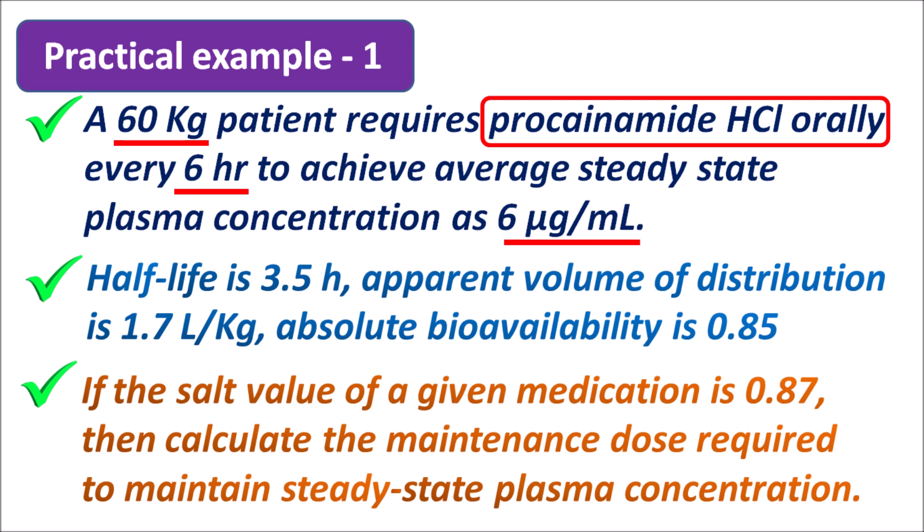Other data given: half life is 3.5 hours and apparent volume of distribution is 1.7 liters per kg. Since volume of distribution is given as liters per kg body weight, we have to calculate the total apparent volume of distribution for the given patient. Absolute bioavailability is 0.85, since the drug is given by oral administration it is not completely absorbed. Salt value of the medication is given as 0.87.